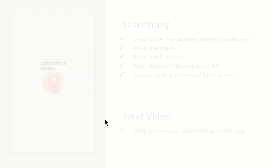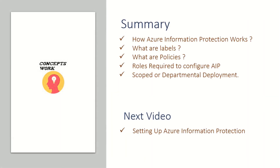This was all about the basics of how Azure Information Protection works — what labels are, what policies are, which role is required for configuring AIP, and what scoped or departmental deployment is. In the next video, I'm going to talk about how to set up Azure Information Protection.